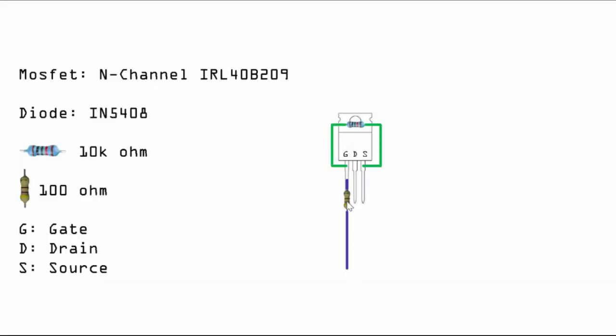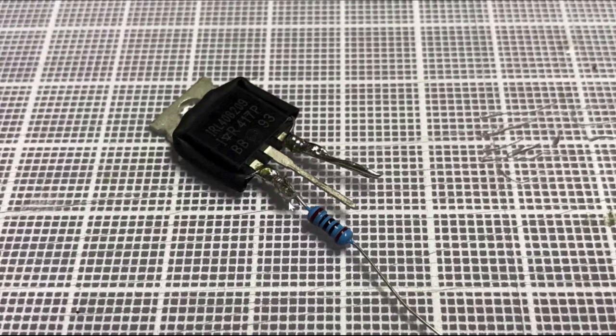The next one is basically to solder the 100 ohm current limiting resistor. I'll just cut this pin to size and then just solder it. Later on I'll solder the blue wire here.